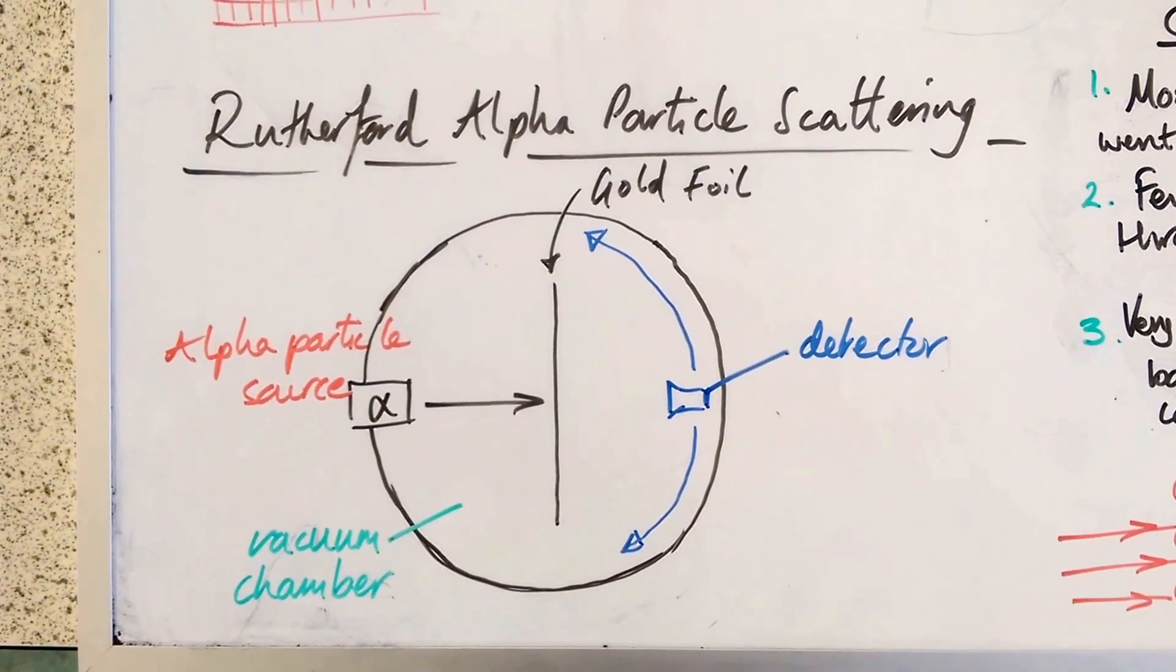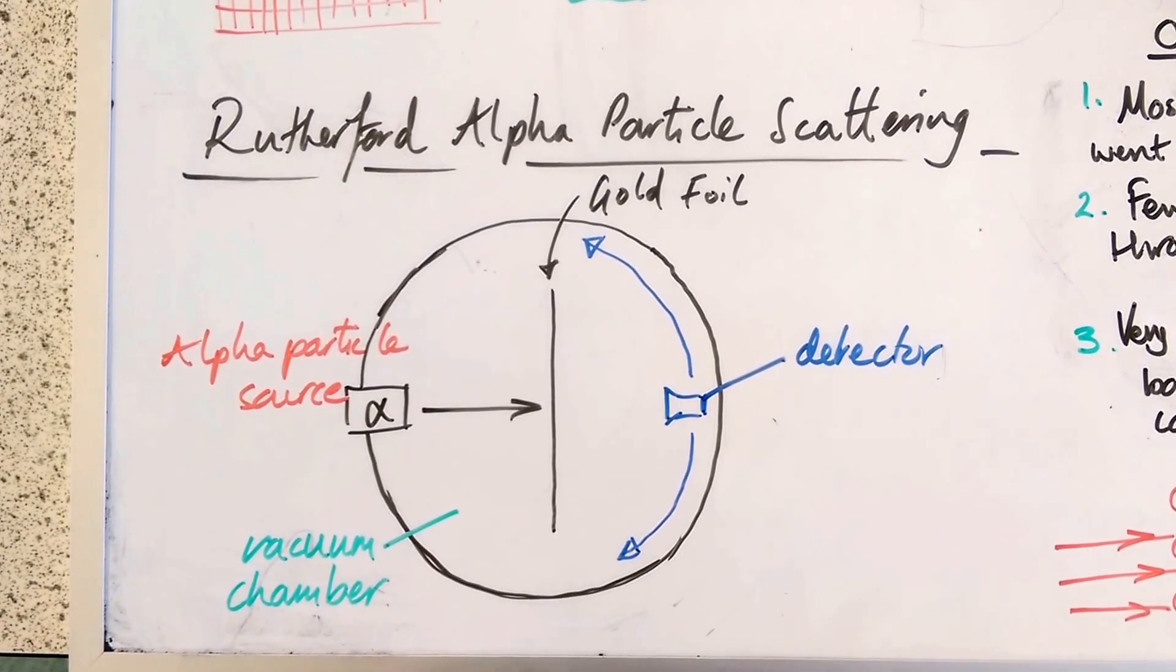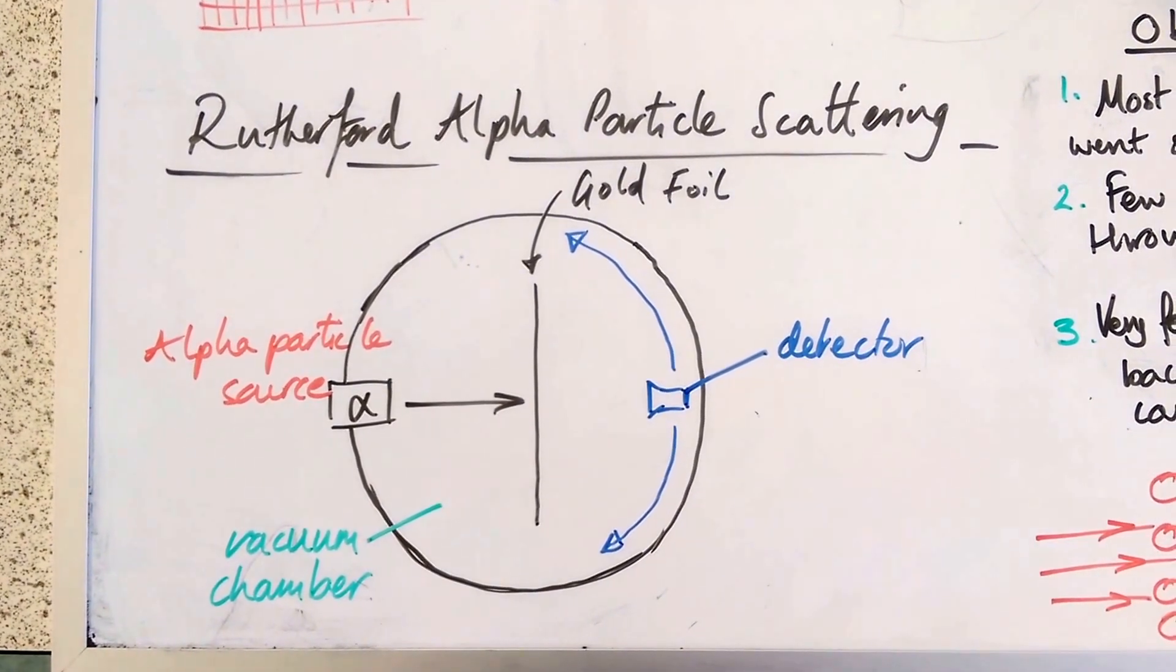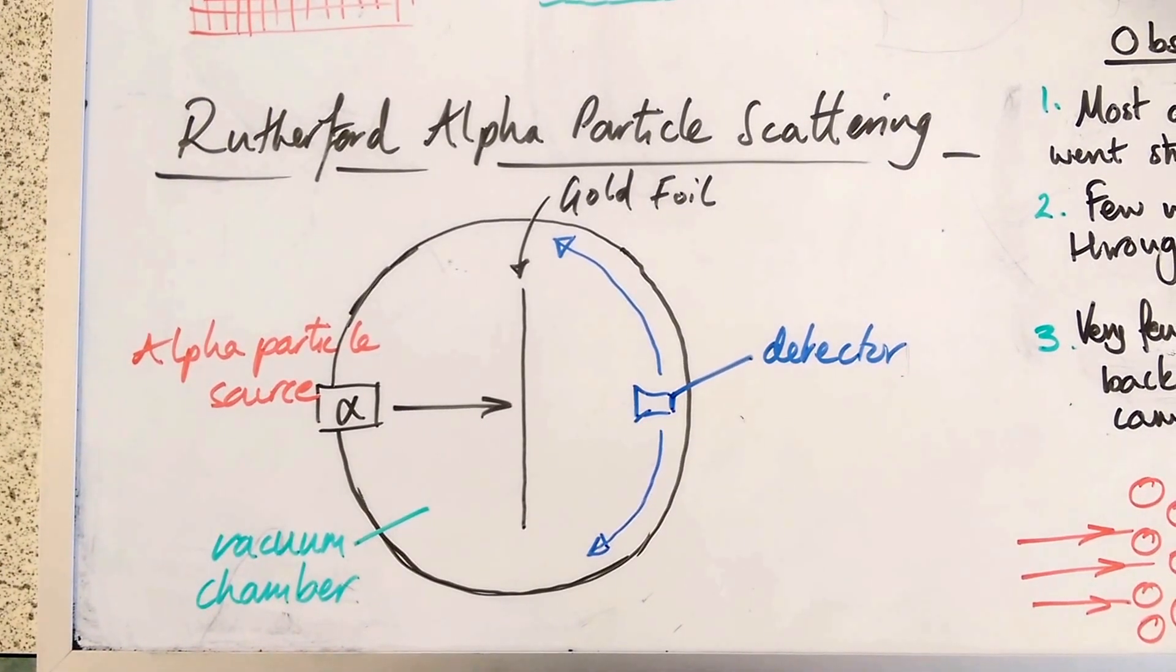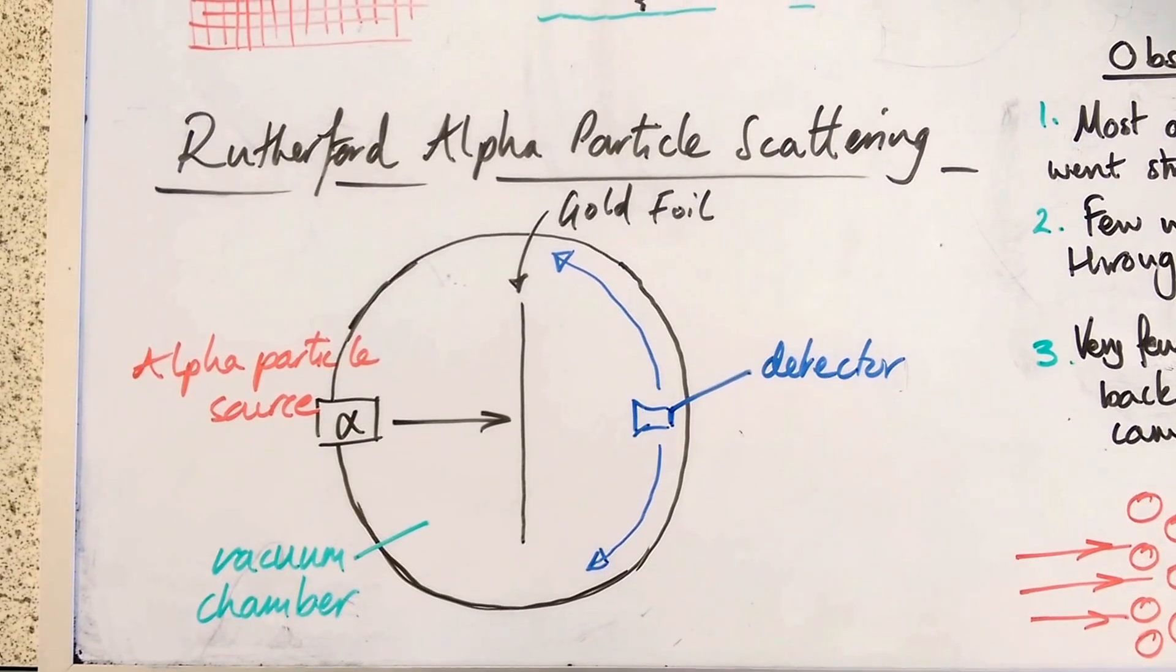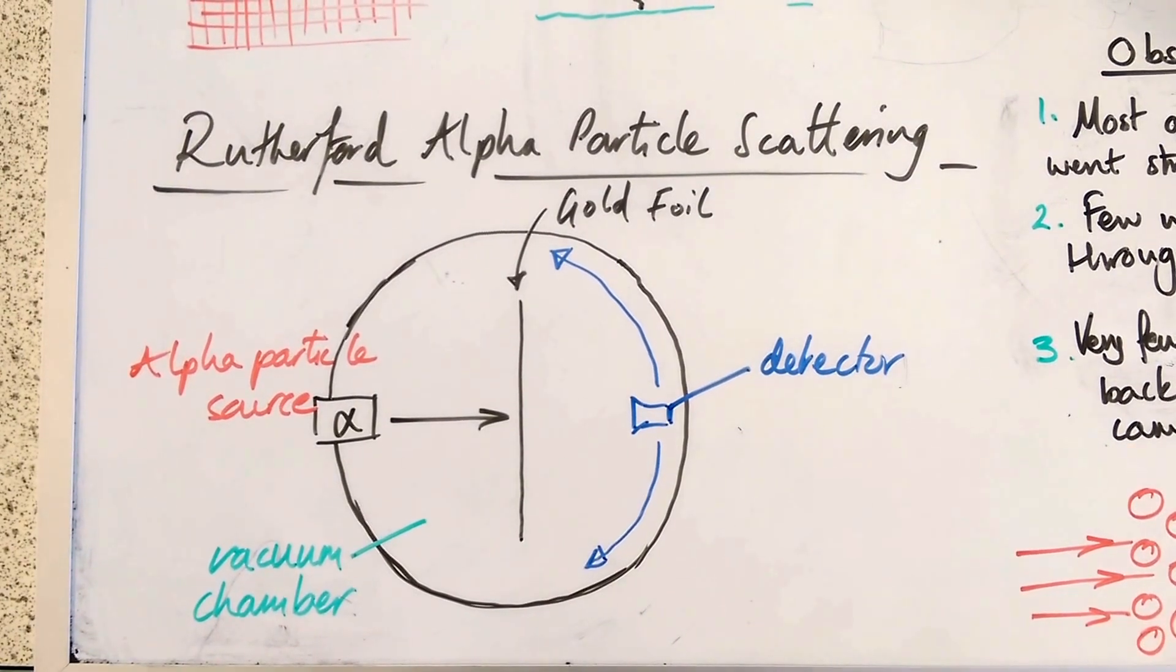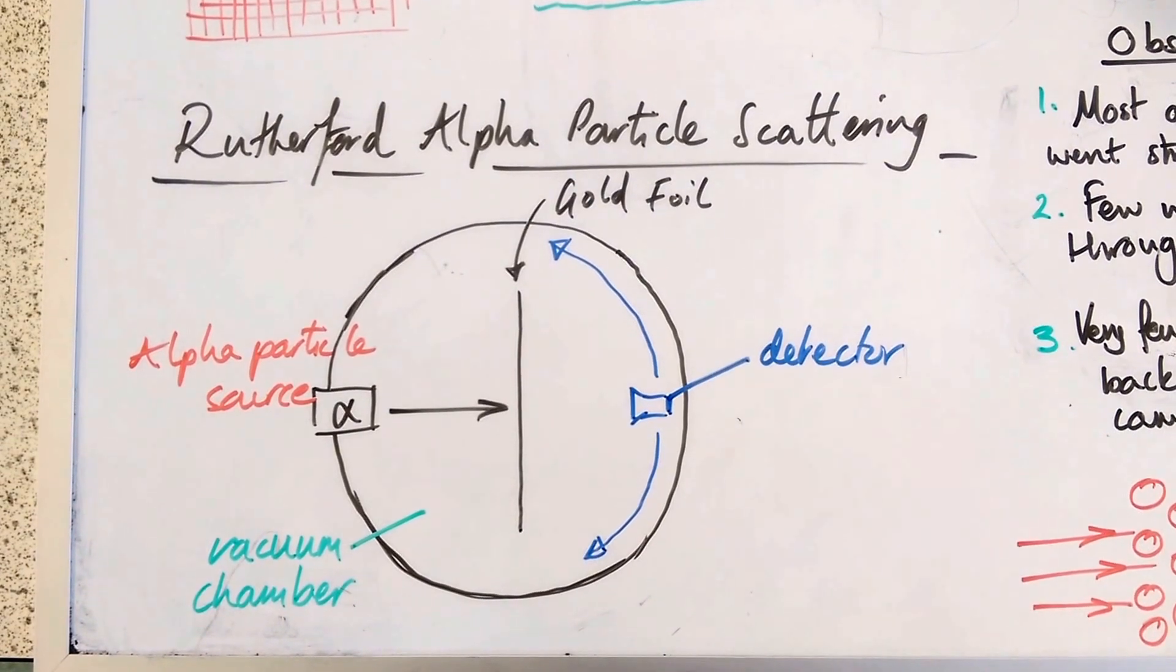Rutherford devised an experiment to prove the Thompson plum pudding model. He took a piece of gold foil and an alpha particle source. Inside a vacuum chamber, so there was no air particles to get in the way, the alpha particles would fly towards the gold foil. He expected them to either stick onto the gold foil or to be deflected around inside and lose all their energy. He did not expect them to reach the detector on the far side.